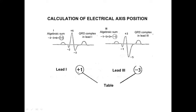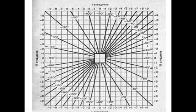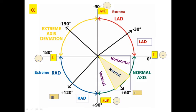On the table, using plus 1 from the 1st lead and minus 3 from the 3rd lead, we find the crossing point. The crossing point of plus 1 and minus 3 gives us minus 70 degrees. So our patient's ECG has extreme left axis deviation.